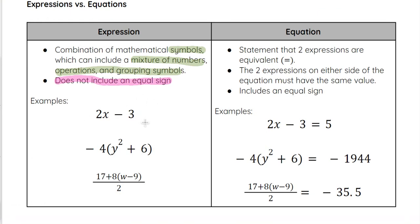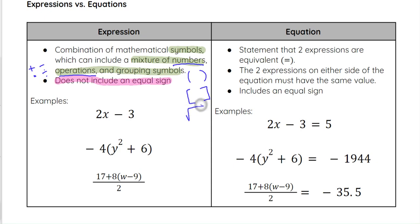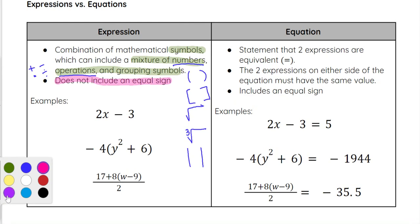These are expressions because they have a mixture of numbers, operations — which means addition, subtraction, multiplication, and division — and grouping symbols. Grouping symbols could be parentheses or brackets, and technically could also indicate a square root, cube root, absolute value bars, or similar things that group numbers together or indicate doing that operation first.